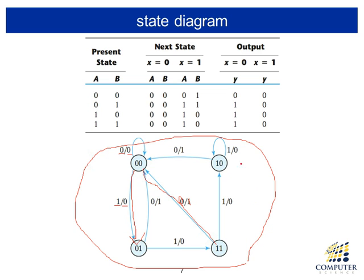This state diagram is constructed from the given problem description. From it, you construct the state table. The diagram has four states, with two state bits A and B covering all four possible combinations. You list the present state, then the next state for when input is zero and when input is one — this information is derived from the state diagram. Similarly for the output when input is zero and when input is one. The state diagram and state table carry exactly the same information, so you should be able to convert from one to the other.